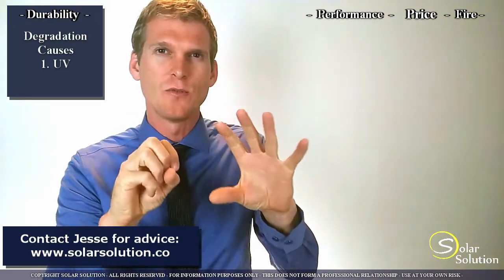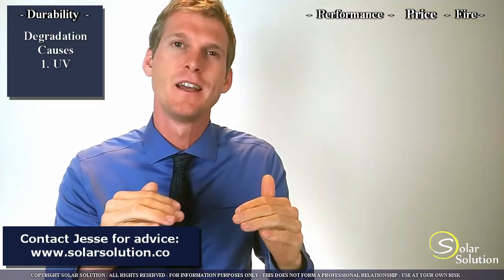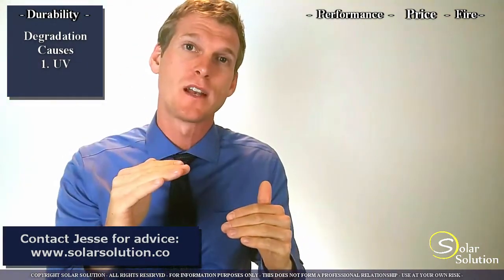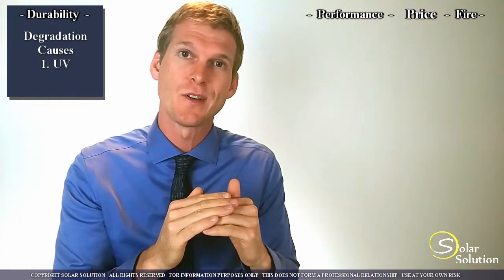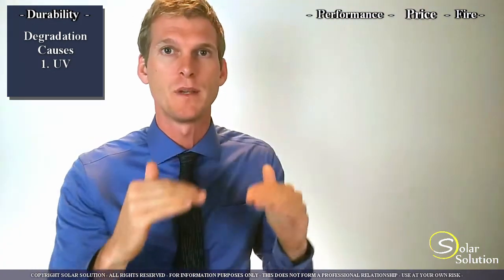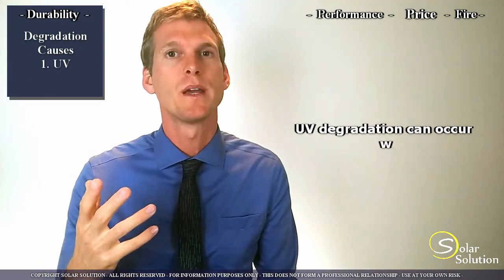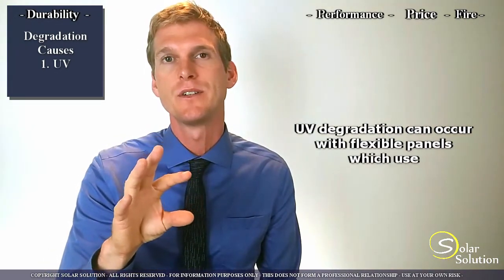You can start to see this cloudy milkiness inside which then can reduce the amount of sunlight that actually reaches the solar cells, and the output of your module can be reduced. Now this is a bigger issue with the cheaper panels that often use the PET material.